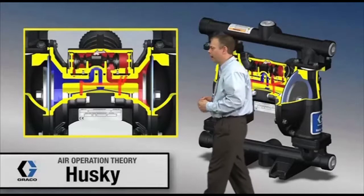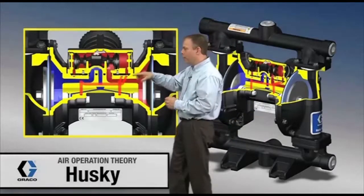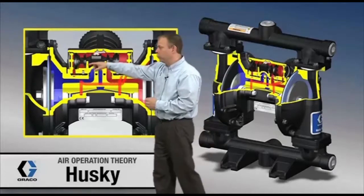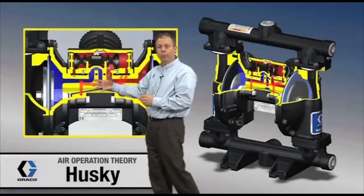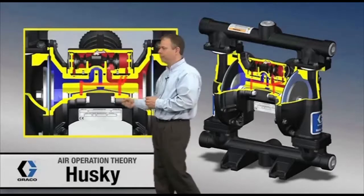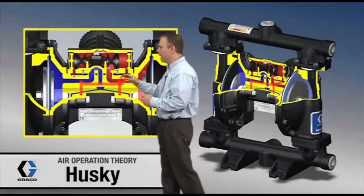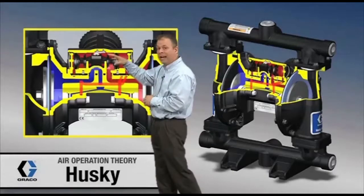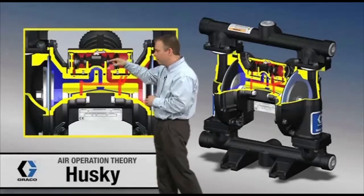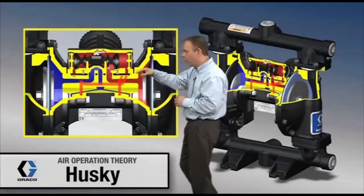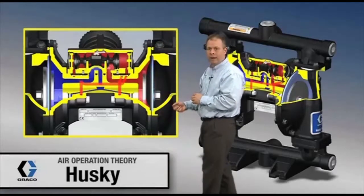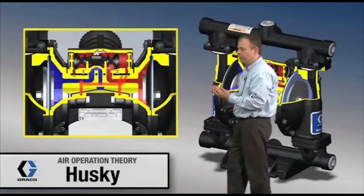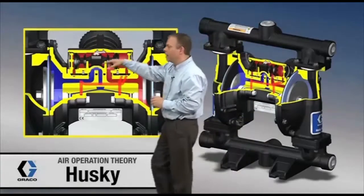The red indicates high pressure air, and the blue on the other side indicates low pressure or venting air. Right now we've got high pressure air in this module — this air valve — and it's piped down through here, all the way back to the back side of that diaphragm. That's what's causing the diaphragm to move in this direction.